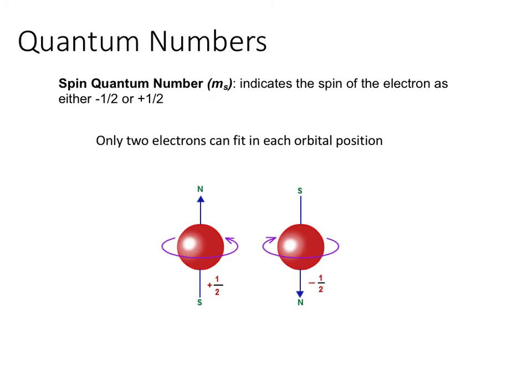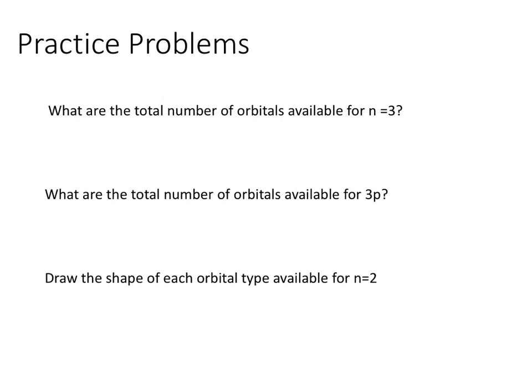Remember, no two electrons in an atom can have the same four quantum numbers. Now let's look at some problems. The first problem asks: what is the total number of orbitals available for N=3? N=3 is the principal quantum number, telling us how far from the nucleus the electron is and its energy level.